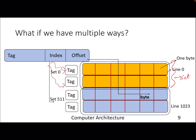The size of the set is determined by the number of ways — how many ways you can put a line within a set. That is the way-associative cache. In a two-way set associative cache, a set is a group of two lines. When a request comes from the processor, we extract the index bits as usual, but now we have to compare two tags instead of the one tag in direct mapped cache.